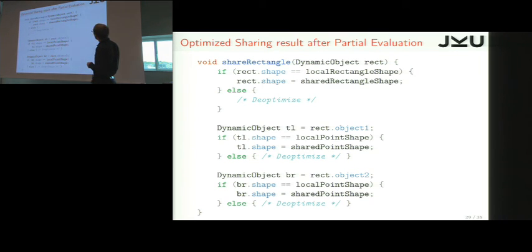And then we do the same for the left point, and then for the right point. And this code is very straight line, and it's branch predicted, because in the other case, if it's not with the optimized structure, then we'll respecialize.